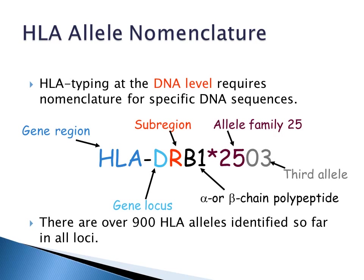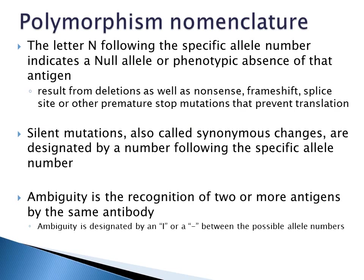There are over 900 HLA alleles identified so far in all loci. The letter N following the specific allele number indicates a null allele or phenotypic absence of that antigen. Null alleles can result from deletions as well as nonsense, frame shift, splice site, or other premature stop mutations that prevent amino acid translation.